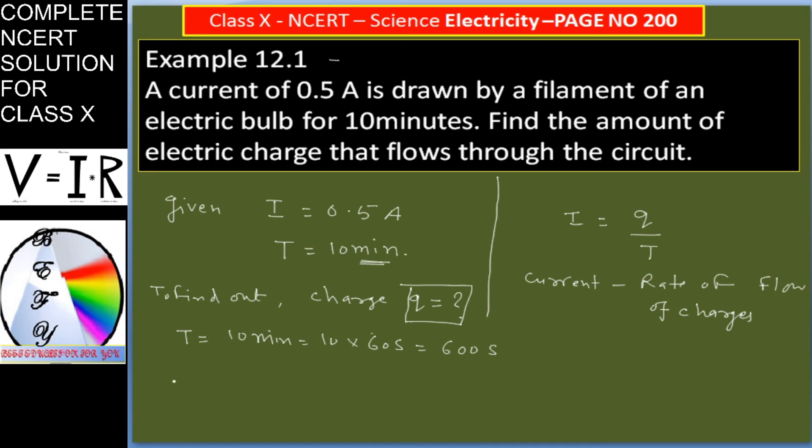Now we have to determine charge. I is Q by T, so from here we can calculate Q. Q is I into T, where I is given as 0.5 ampere, half ampere.